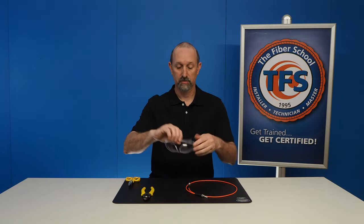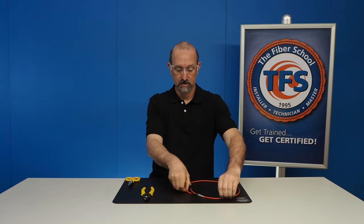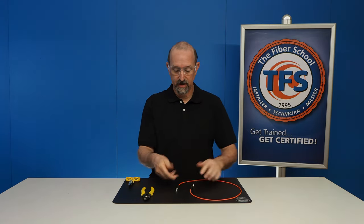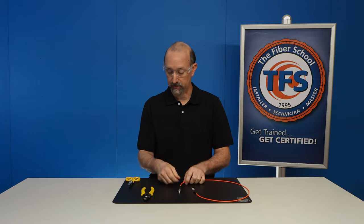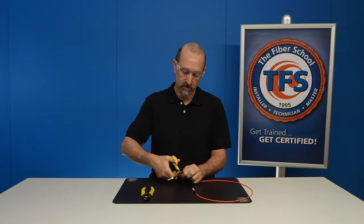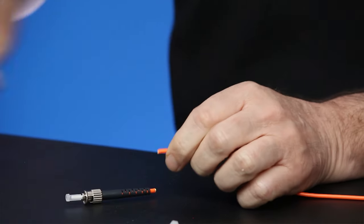So the first thing I do, put my safety glasses on to keep the fiber out of my eyes. I got a regular cable assembly here that I'm going to show you how to use the three-hole stripper. First thing I'm going to do is cut off this end here with my aramid string cutters.